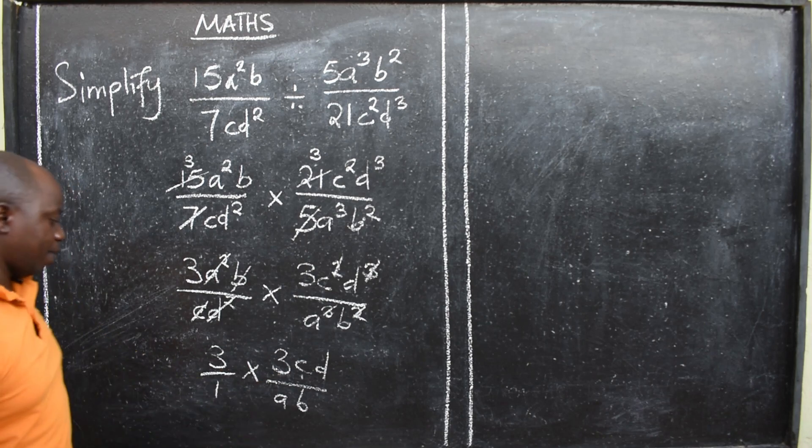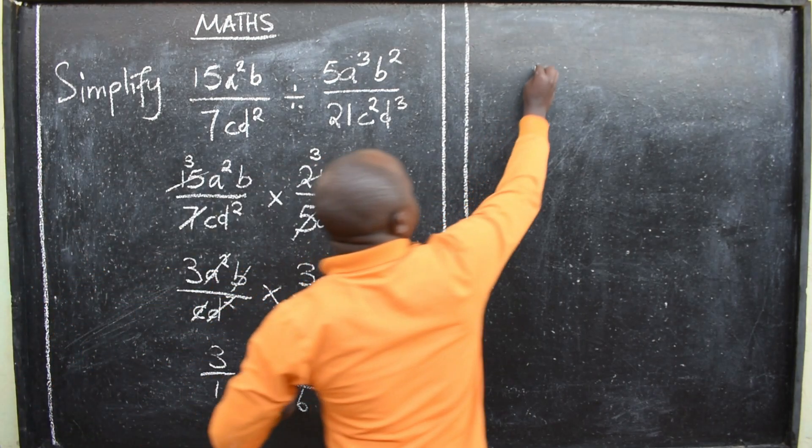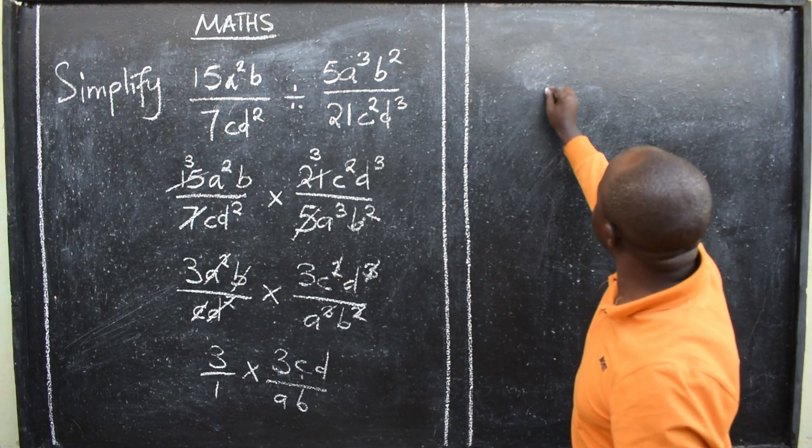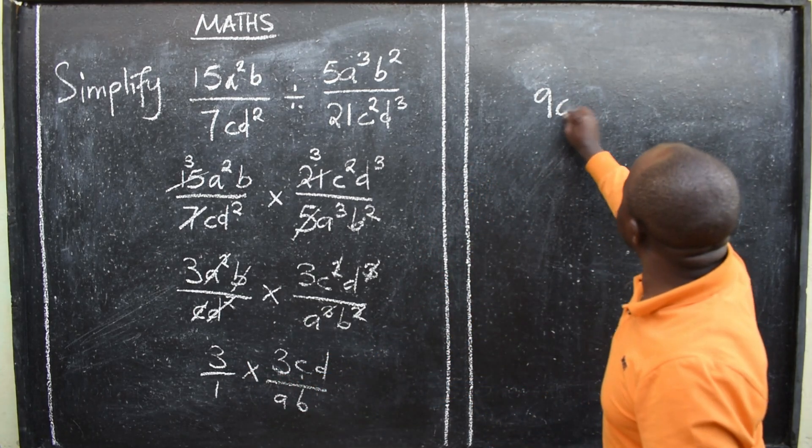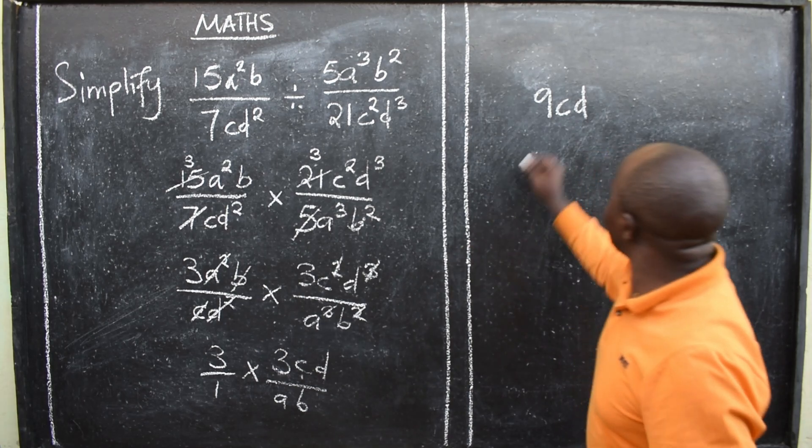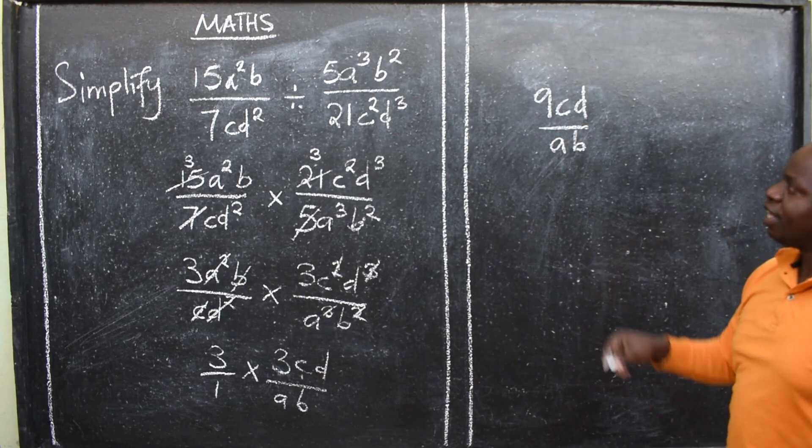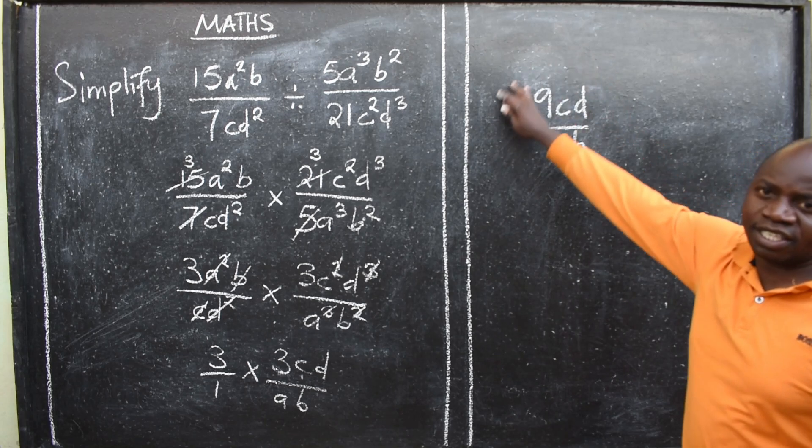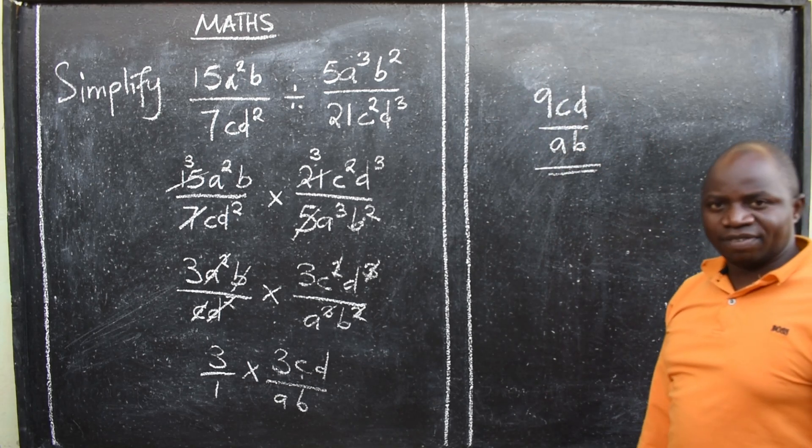Then I can multiply. 3 times 3 will give me 9. Then cd. 1 times ab will be ab. At this point, there is nothing you can do. You have simplified. This is the final answer of 9cd over ab.